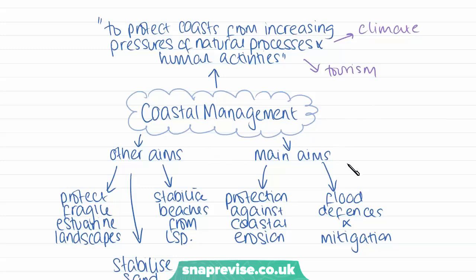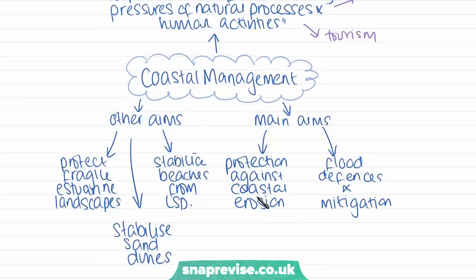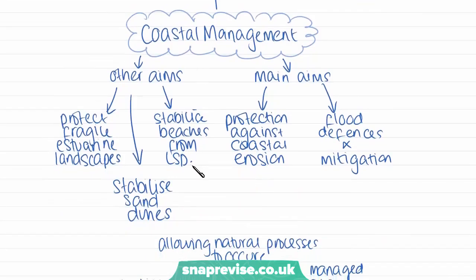The main aims of coastal management are to build flood defences and mitigate against flood risk — preparing and trying to prevent flood risk — and also protecting against coastal erosion. Other aims include stabilising beaches from longshore drift, stabilising sand dunes, and protecting fragile estuarine landscapes.